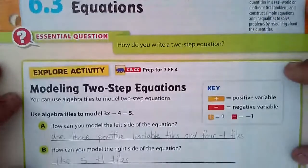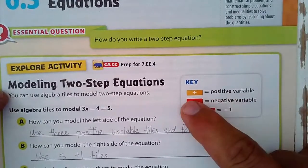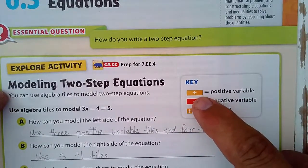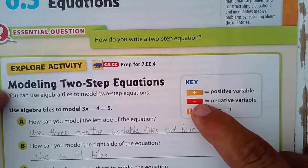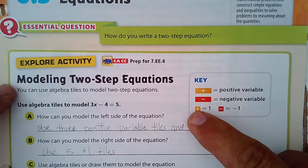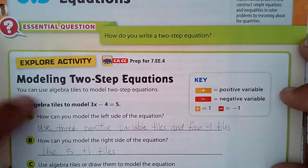We're going to start with modeling two-step equations. In this key we have positive variable, that represents a positive variable, that represents a negative variable, and that's positive one and negative one.